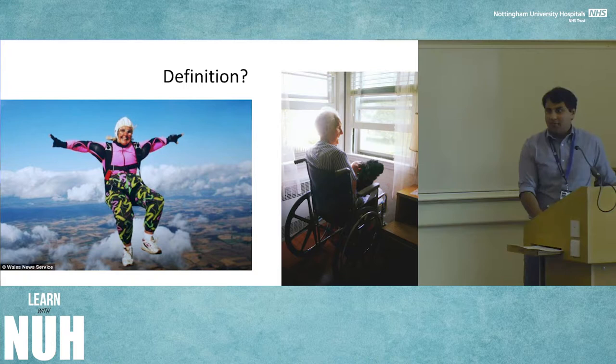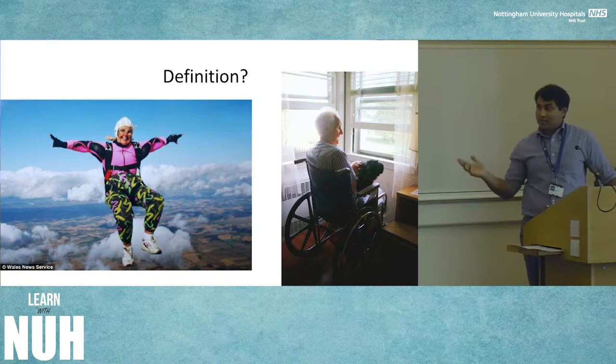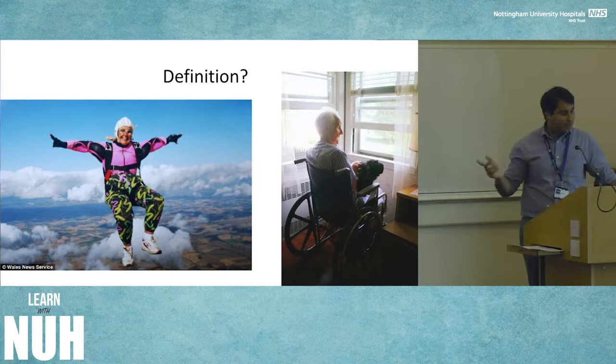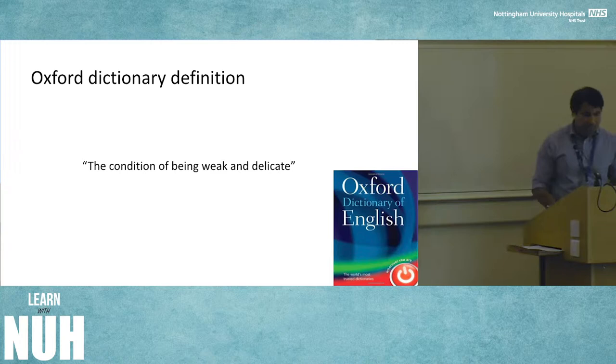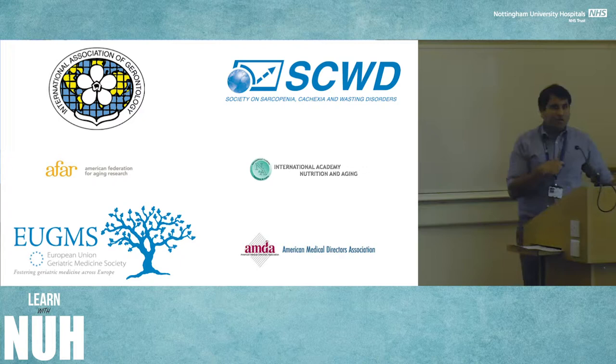We need to start with the definitions. What is frailty? There is no universal definition yet, but there are some key themes. The lady on the left is apparently the oldest skydiver in England at 95 or 96 — she's fairly fit and well. The gentleman on the right from a care home is in a wheelchair with mobility problems, so he probably has some degree of frailty. The end-of-the-bed eyeball test is still very relevant, but there's always a grey area in the middle. The Oxford Dictionary doesn't help — 'the condition of being weak and delicate' is not scientific at all.